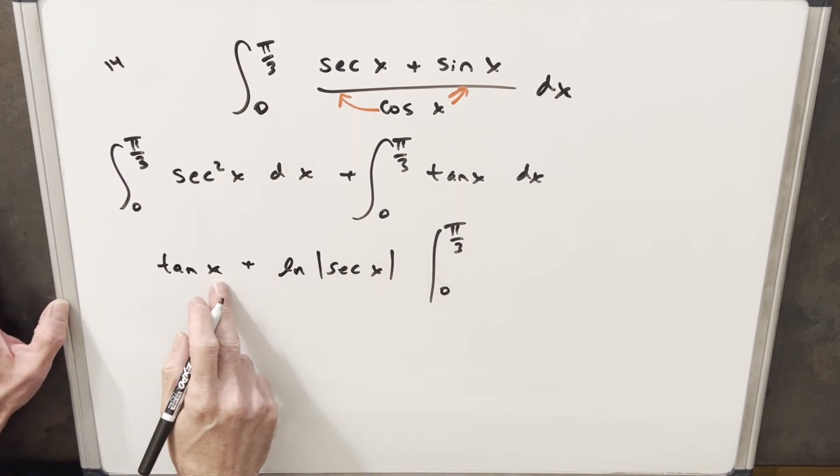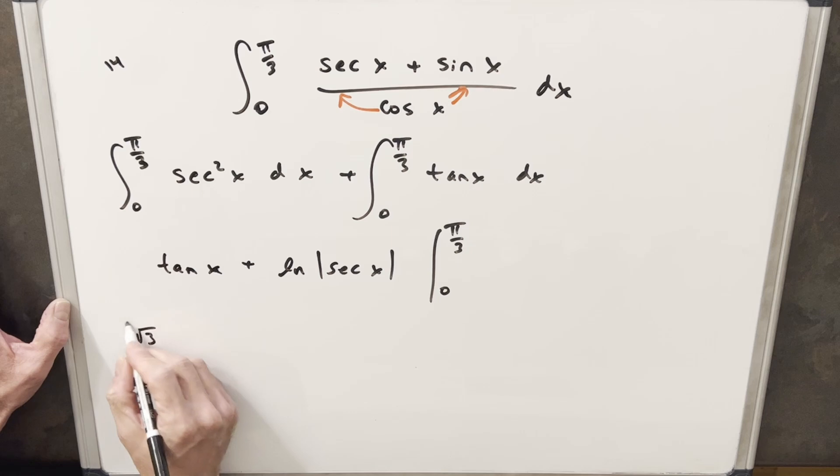So first plugging in pi over 3, tan at pi over 3 is going to be just square root of 3 for our first piece.